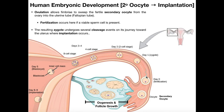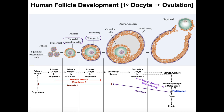If no sperm cell arrives, the secondary oocyte will not finish meiosis II and will degrade. However, if a sperm cell is present, it can potentially fertilize the secondary oocyte. Through the processes described in the oogenesis video, fertilization induces the secondary oocyte to complete meiosis II, maturing first into an ootid and then an ovum. Once the female pronucleus and the male pronucleus from the sperm cell fuse into a mature nucleus, it has become a zygote.